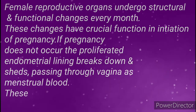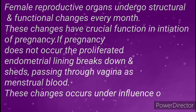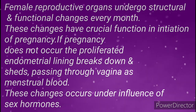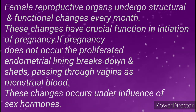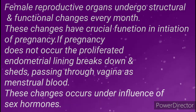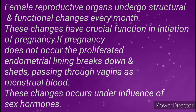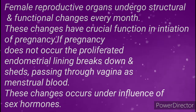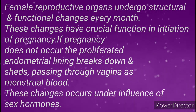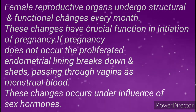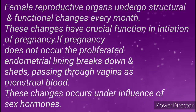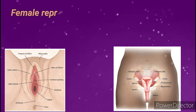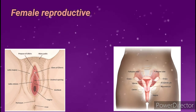These monthly changes play a crucial role in the initiation of pregnancy. If pregnancy does not occur, the proliferated endometrial lining breaks down and sheds, passing through the vagina as menstrual blood. These changes are under the control of sex hormones.